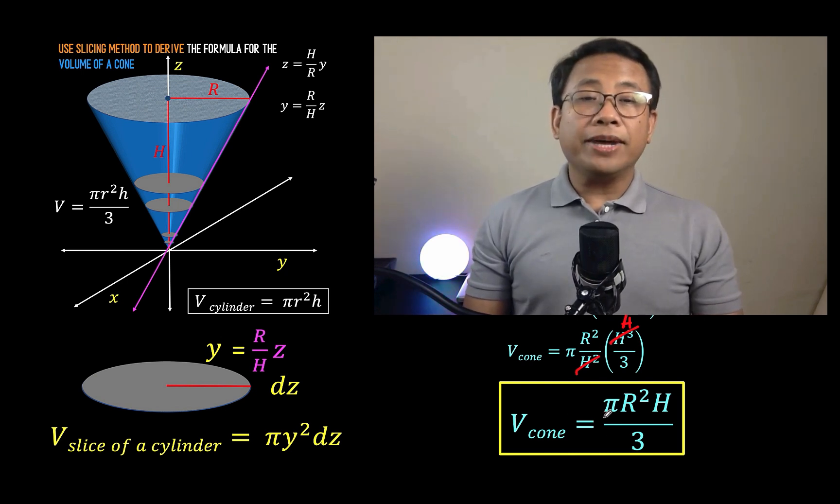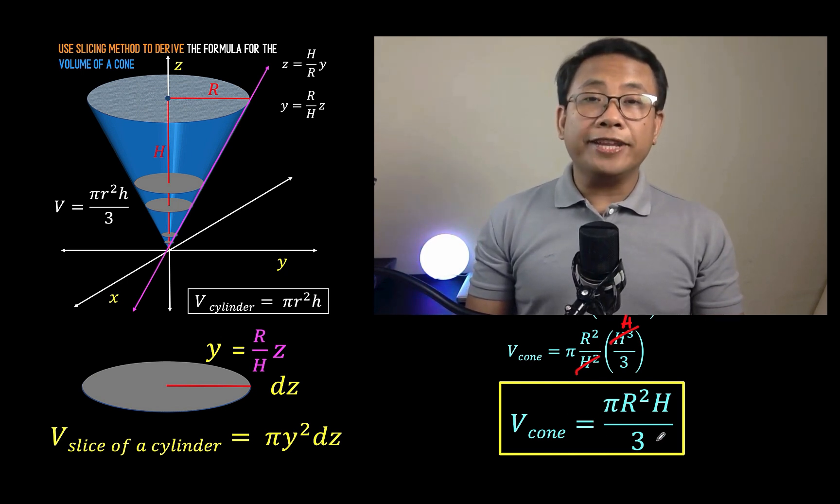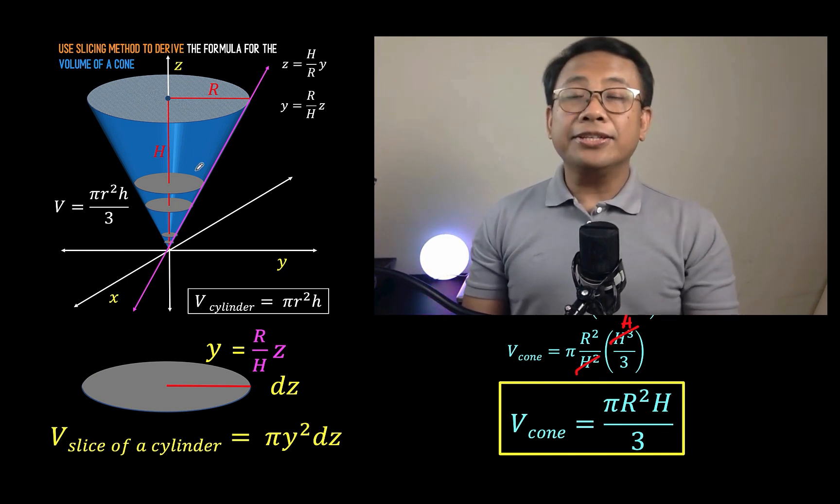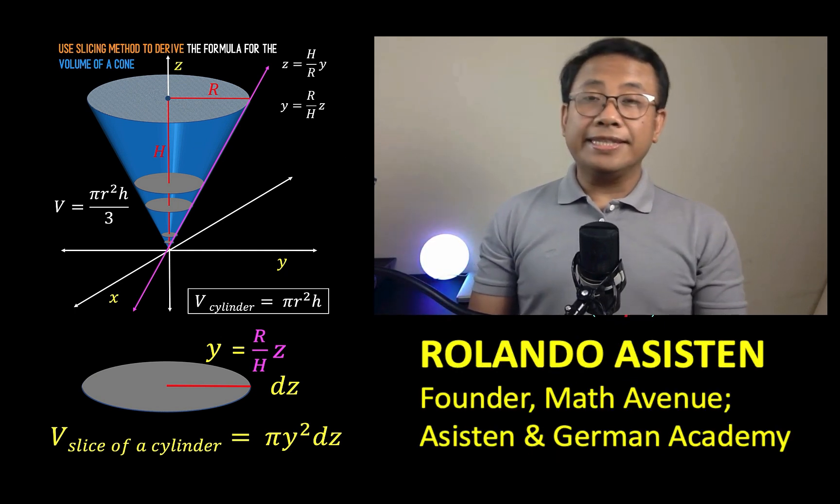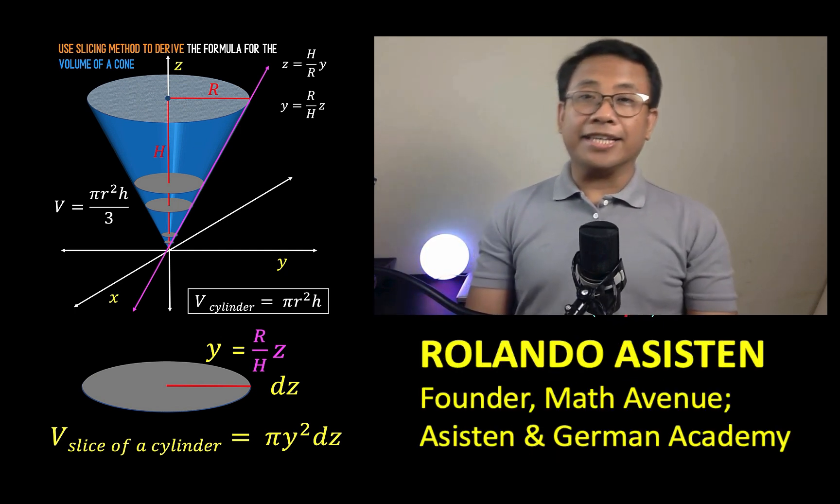The formula V equals π r² h over 3 is derived using a calculus method, using the technique called definite integration. So thank you very much, this is Rolando Asisten, and we hope to see you again in our next video.